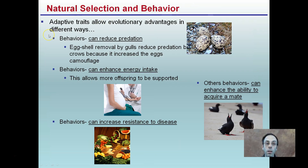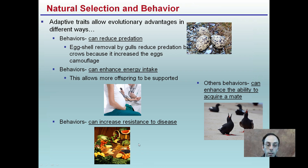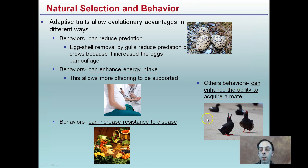Natural selection behavior: adaptive traits allow evolutionary advantages in different ways. Behaviors can reduce predation — some birds will remove eggshells, as gulls do, to reduce predation by crows and increase the camouflage of those eggs. Other behaviors can enhance energy uptake, allow more offspring to be supported, or increase resistance to disease — for example, eating a healthy diet can help reduce your incidence of getting disease. Other behaviors can enhance the ability to acquire a mate, such as mating rituals or calls, which if performed well can increase the odds of finding and acquiring a mate.